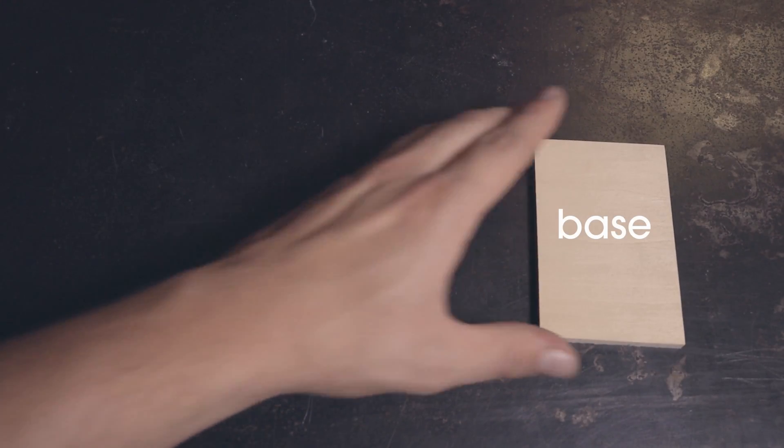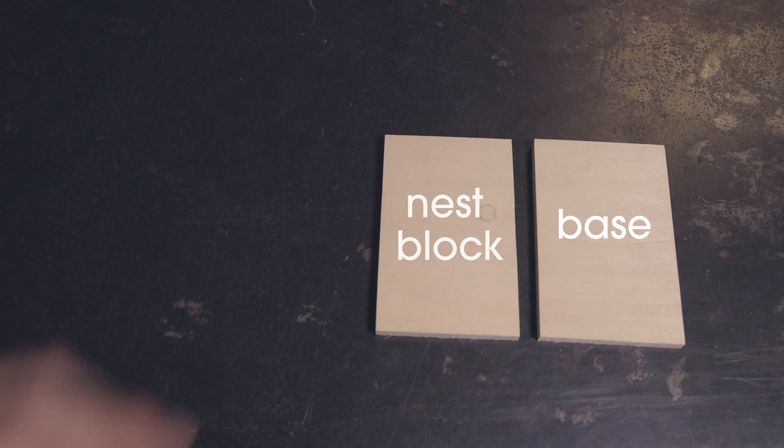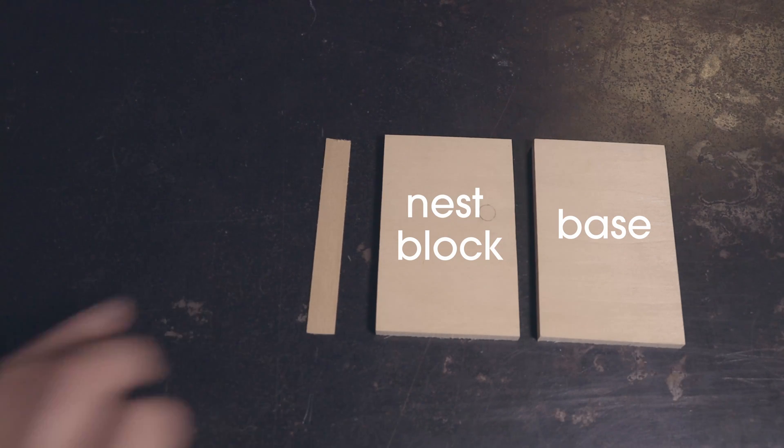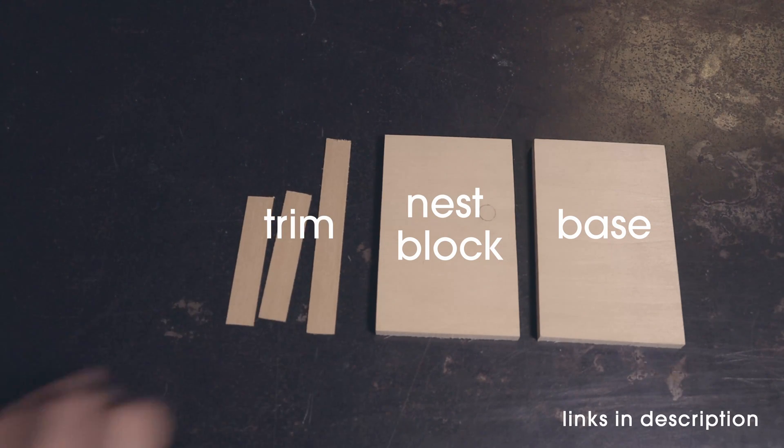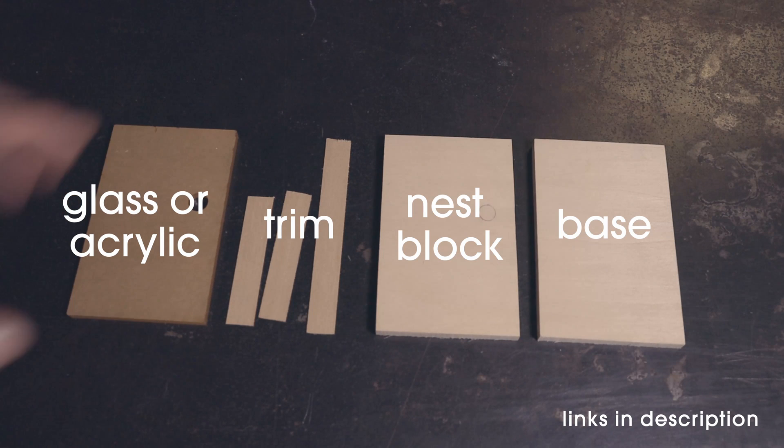We will need a base, a nest block, side trim, and glass or acrylic. You can get all of these materials at a local hardware store or through the links in the description.